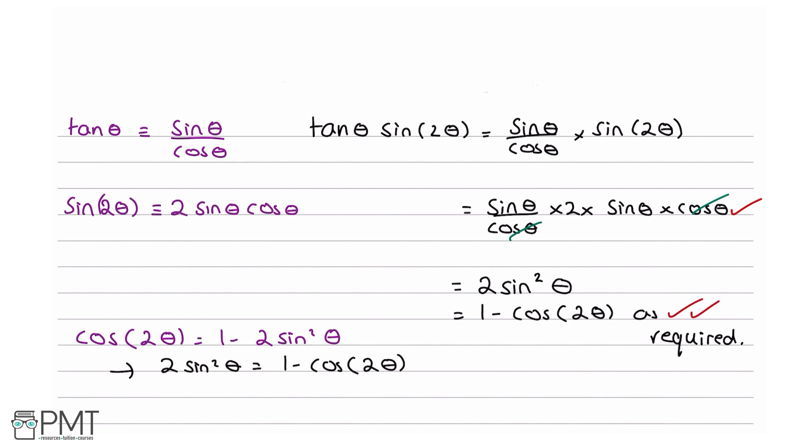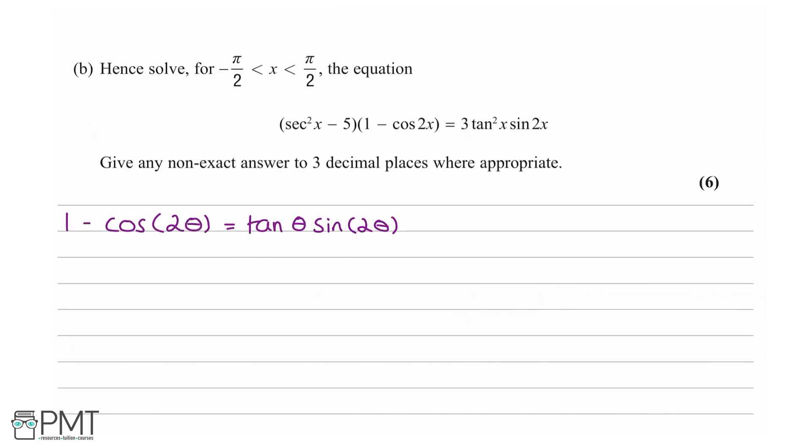We have been told to hence solve, for x between minus π/2 and π/2, the equation sec²x minus 5 times (1 minus cos2x) equals 3 tan²x sin2x. Give any non-exact answer to three decimal places where appropriate, for six marks.